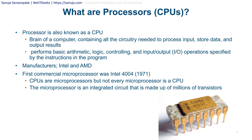A processor, also known as a CPU or central processing unit, is basically the brain of your computer. It contains all the circuitry needed to process input, store data, and output results. It performs basic arithmetic, logic, controlling, and input/output operations. The main manufacturers are Intel and AMD. The first commercial microprocessor for mass use was the Intel 4004, created in 1971. CPUs are microprocessors, but not every microprocessor is a CPU.